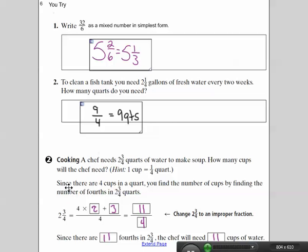The question is asking me how many cups. So I'm going to take, since I know there are 4 cups in a quart, I find the number of cups by finding the number of fourths.